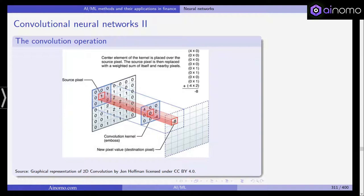The center element of the kernel is placed over the source pixel. The source pixel is then replaced with a weighted sum of itself and nearby pixels. You can see the calculation here. We get minus eight, and this is the new pixel value in the destination. What we do next is shift this convolution kernel to the right. We use nine pixels and calculate the values here, and here, and here.